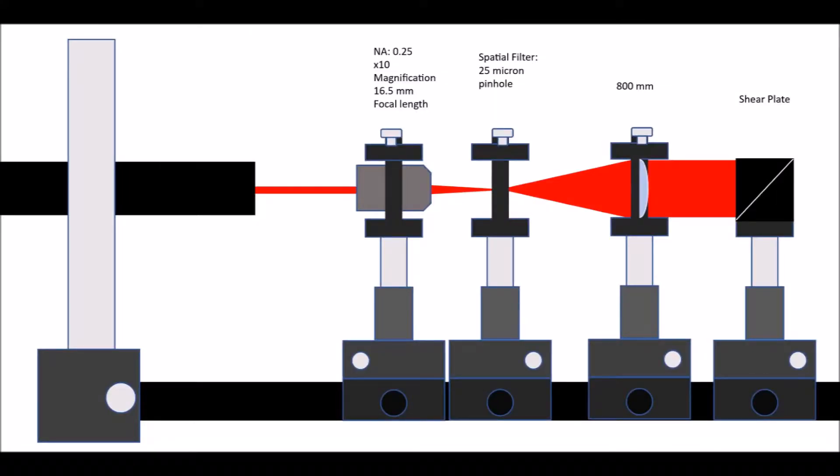The objective lens that we used had an NA of 0.25 and a focal length of 16.5mm. To fill the aperture of the collimation lens, we used an 800mm focal length lens resulting in an expansion ratio of about 50.